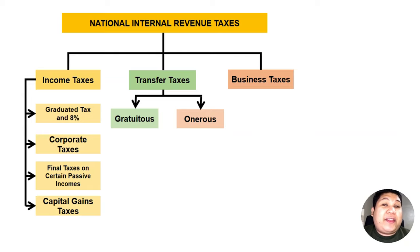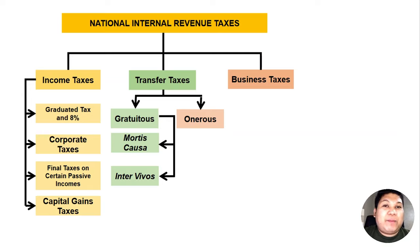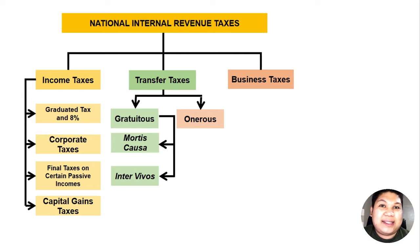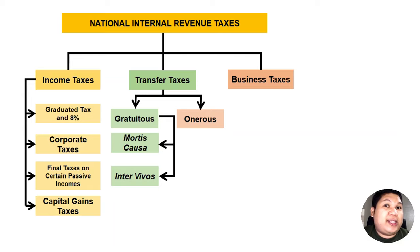Under gratuitous transfers there are two types of taxes: mortis causa and intervivos. Mortis causa — mortis means death, causa means after — so when the transfer happens upon or after death, it is subject to estate tax. Intervivos — inter means within, vivos means life — means the transfer happens during the lifetime of the transferor, and that transfer is subject to donor's tax, essentially because it is a gift while both parties are alive.